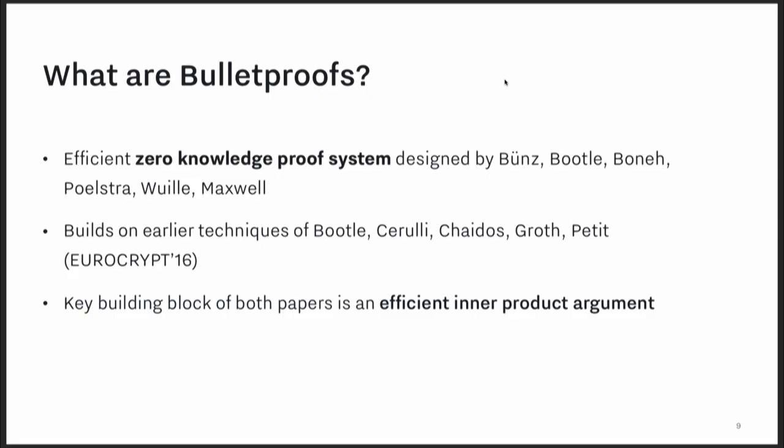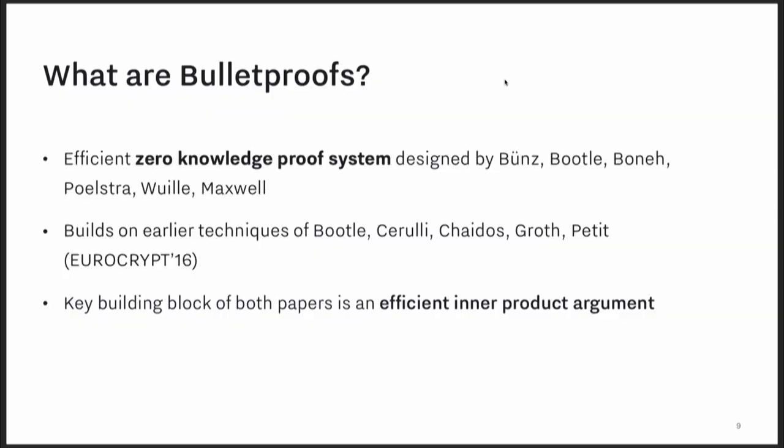So what are Bulletproofs? It's a paper about an efficient zero-knowledge proof system designed by Bünz, Bootle, Boneh, Poelstra, Wuille, and Maxwell that came out in about 2017. It builds on techniques introduced by a EuroCrypt 2016 paper. For both of them, the thing that makes them extremely efficient is a very efficient inner product argument. That is the key construction that allows you to do these proofs in O(log n) time.